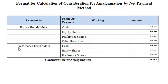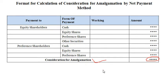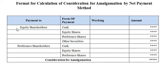To that we add consideration given to preference shareholders in the form of cash, equity shares, and preference shares. Finally, we get the total consideration given to the amalgamating company for amalgamation. So in the first step, we calculate total consideration for amalgamation given to both equity shareholders and preference shareholders of the amalgamated company.